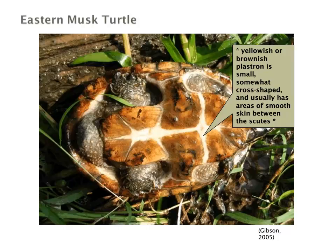The plastron of the eastern musk turtle is quite small and somewhat cross-shaped, as you can see here. It usually has areas of smooth skin between the scutes, so it's not fully fused. Notice that the anterior part, closer to the head, is quite larger, while the part towards the back of the turtle in terms of the plastron is significantly smaller.